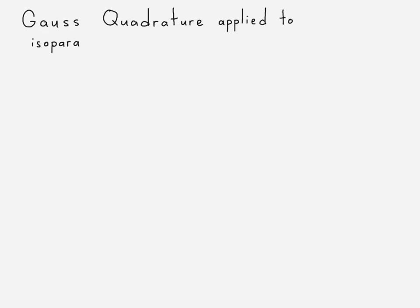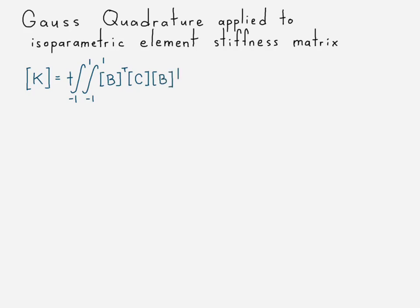Okay. So now building off what we did before, we're going to go ahead and see how Gauss quadrature works for the isoparametric element stiffness matrix. And so here, isoparametric element stiffness matrix. There's our thickness. There's the strain displacement matrix. There's the constitutive matrix. There's the determinant of the Jacobian matrix. We don't want those integrals. So we'll go ahead and replace them with summation signs.